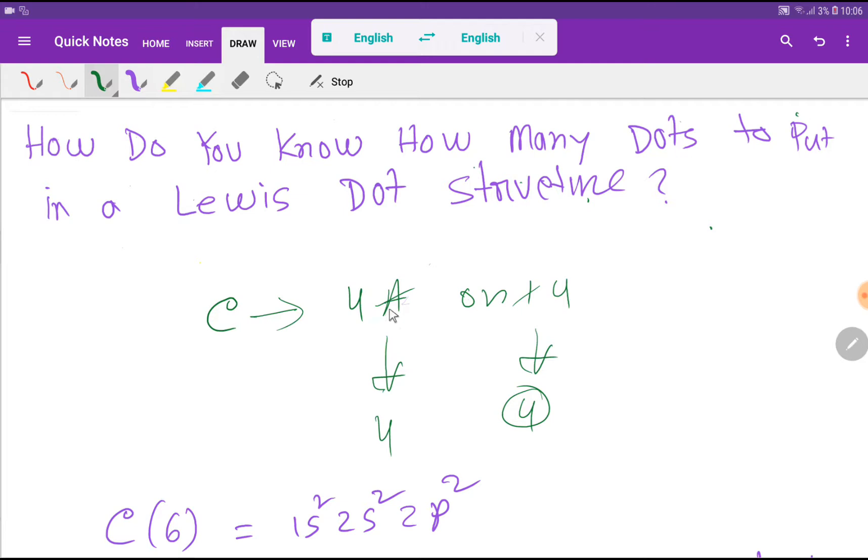Group 4A means if you deduct the A, then you will get four. This means that carbon has four dots, or carbon is an element of group 14. So if you deduct the first digit, then you will get four. So carbon has four dots.